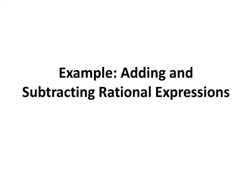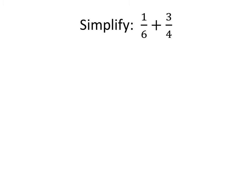In this video, we'll see some examples of adding and subtracting rational expressions. Rational expressions is just a fancy name for fractions. When we want to add two fractions, the most important thing we need to do is make sure that we have a common denominator. And what we see here is that we don't yet. The denominator of the first fraction is 6, and the denominator of the second fraction is 4.